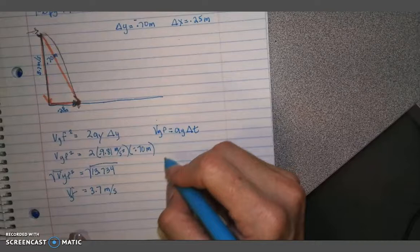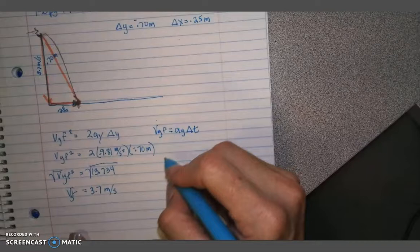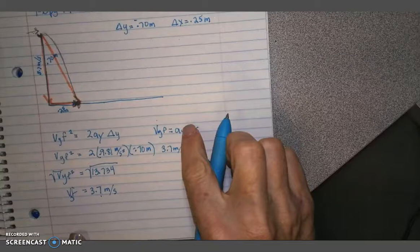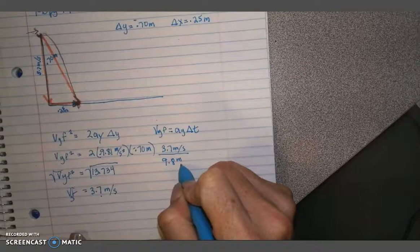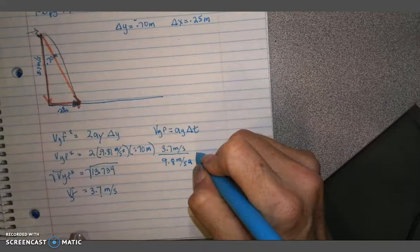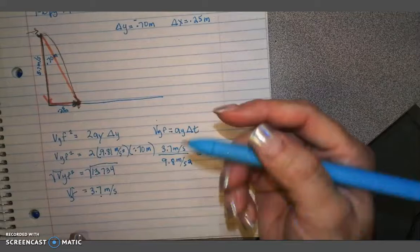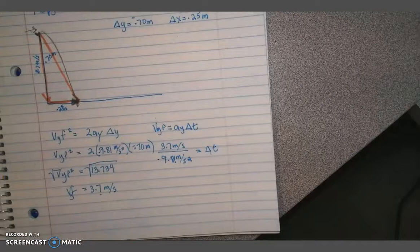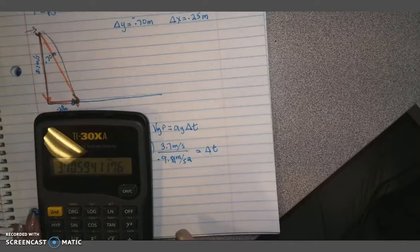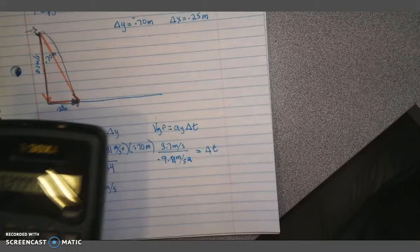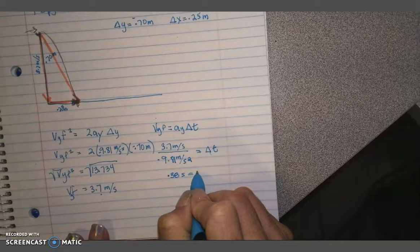Well I know that v sub y f is the 3.7 meters per second. And I know a sub y is always that 9.8 meters per second squared. Remember time is a scalar quantity even though this is actually negative 9.81 here. It really won't matter. Directionality won't matter here because time is scalar quantity. So we're going to take that 3.7 and we're going to divide it by the negative 9.81. And that gives us 0.38 seconds.